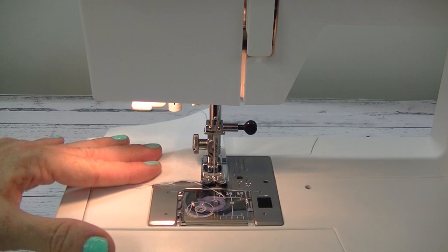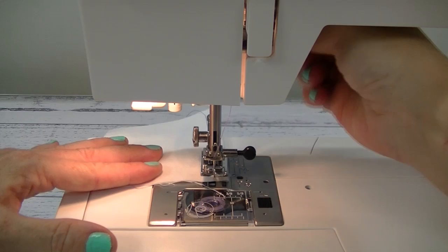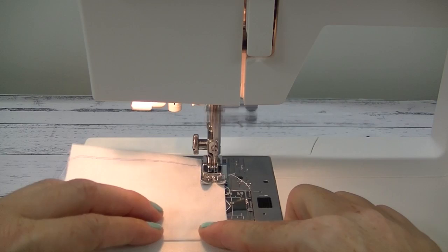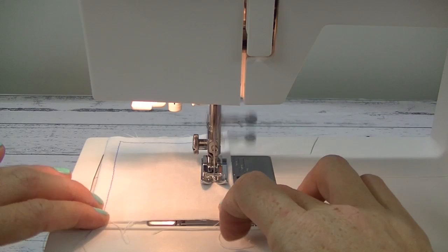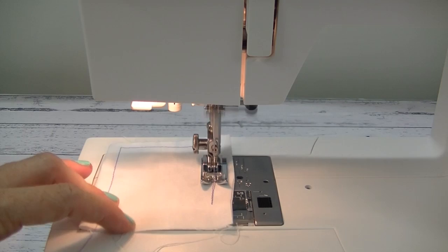To turn a corner, wind the flywheel towards you until the needle is in the down position. Lift the presser foot lever, lower and turn the corner. Use the reverse button. Hold down until it sits as far back as you want it to. Release and then stop.